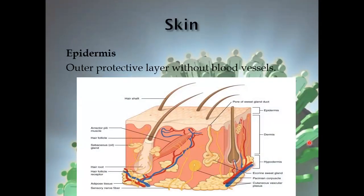This picture shows three layers of the skin. The outer one is the epidermis, which is without blood vessels. The second one is the dermis, which contains blood vessels, sweat glands with a pore opening at the epidermis, sebaceous (oil) glands, and hair follicles attached to muscles. The third layer is the hypodermis, which constitutes adipose tissue and the cutaneous vascular plexus.